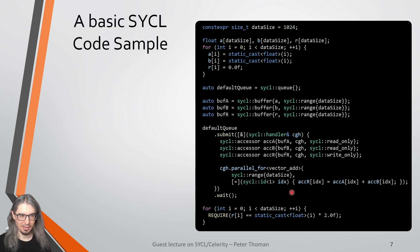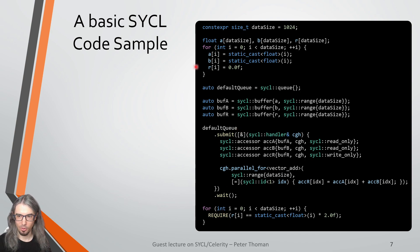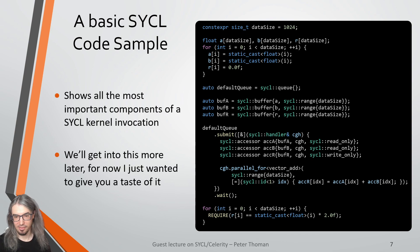Here is a basic example. I won't go into too much detail on it now because we'll discuss each individual point in more detail throughout the first half of this lecture. The idea is that there's some host code that initializes buffers, and the SYCL part is really just where we create a queue, create some buffers, and then submit work to this queue.